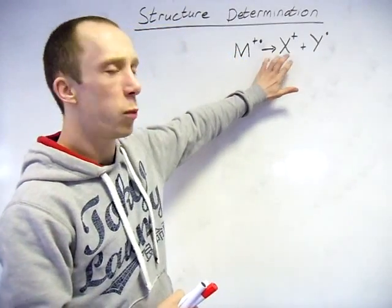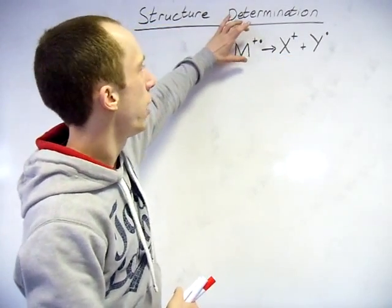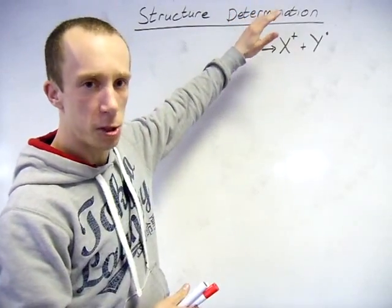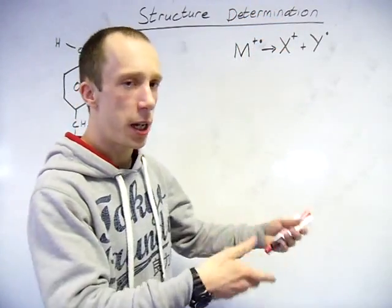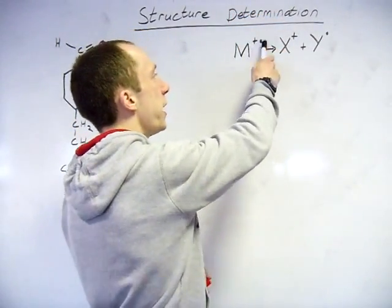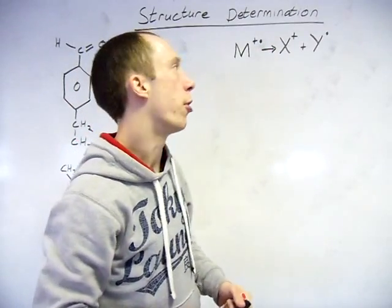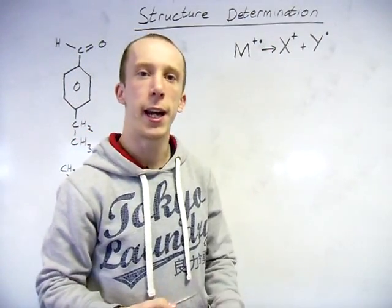So this is what is happening here. Our actual molecular ion, what we are starting with in this case, has been ionized - it's lost one electron. Now because of that it can fragment.